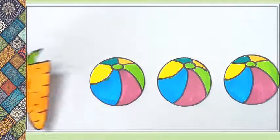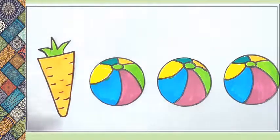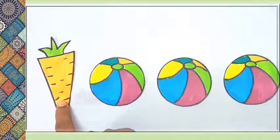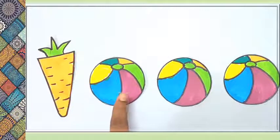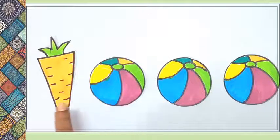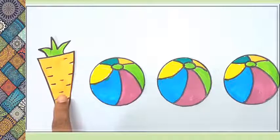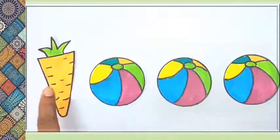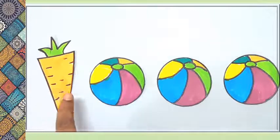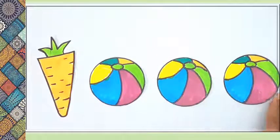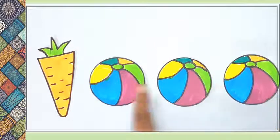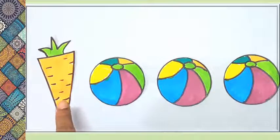When I place a carrot here, what will you say? Is this carrot looking like the beach ball? No, the carrot is not looking like the beach ball. So we will say the carrot is different. Beach balls are same; carrot is different.